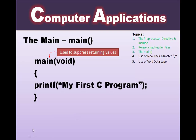Moving on to main — main is the calling area or program running area where you write your statements. void is used before main to suppress returning values; if void is written next to the main function it stops the function from returning values. The writing method uses opening braces, then the output statement printf with 'my first C program', found in stdio, and then the closing bracket.